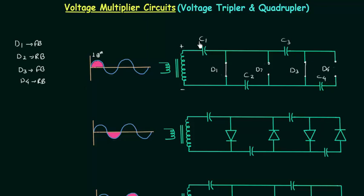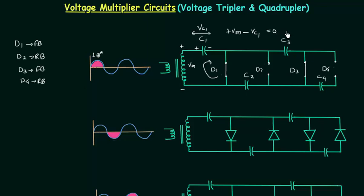Now we have to calculate Vc1, the voltage across capacitor C1. Vm is the input voltage, and applying Kirchhoff's voltage law gives us: plus Vm minus Vc1 equals 0. This plate is positively charged and this plate is negatively charged, so Vc1 is equal to Vm. The voltage across capacitor C1 is equal to Vm.